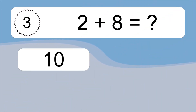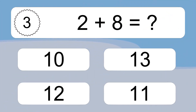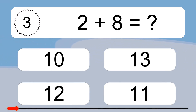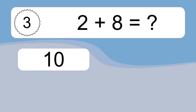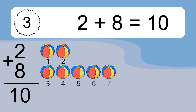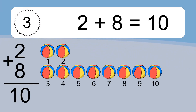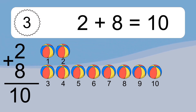2 plus 8 equals what? 2 plus 8 equals 10. Let's count it. 1, 2, 3, 4, 5, 6, 7, 8, 9, 10.